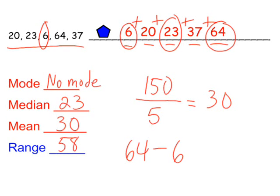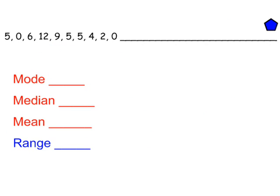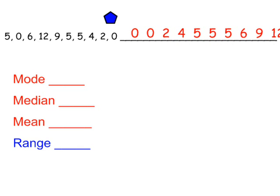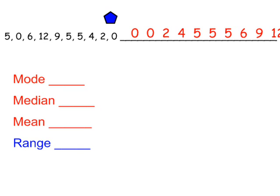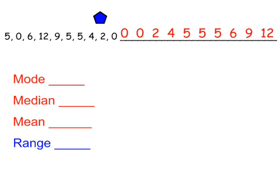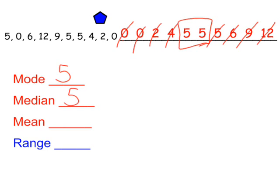Let's take a look at another data set. I've already put them in order from least to greatest. For the mode: we have two zeros and three fives, so our mode is five — the number that appears most in that data set. For the median, I'm going to cross off two numbers at each end. We end up with a tie — two numbers in the middle — and since they're both fives, our median is five.